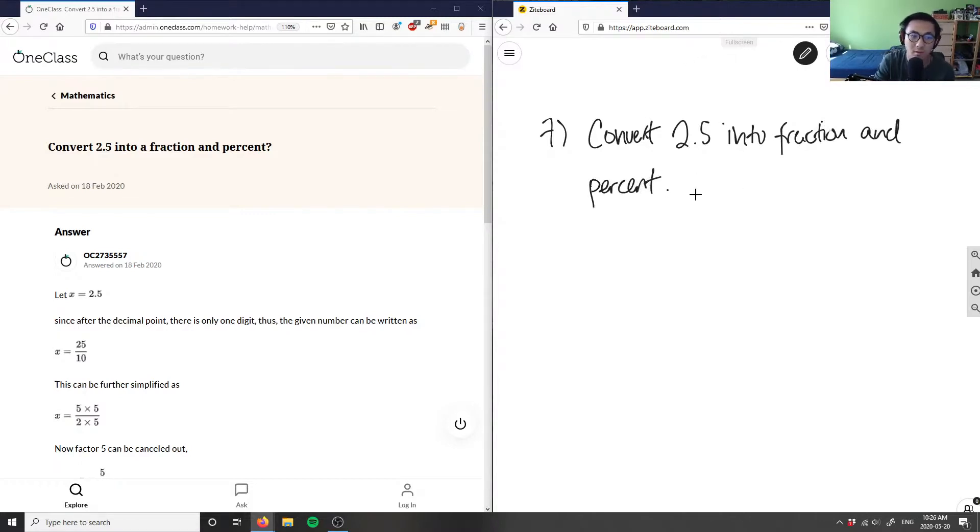Let's convert 2.5 into a fraction. I have 2.5 here. This part here is the whole number part, and anything after the decimal is the fraction part or decimal part. It's in the tens digit because this is the first place of a decimal.